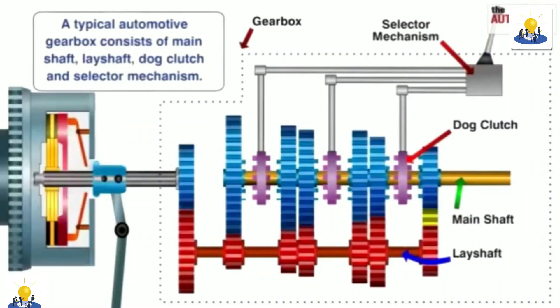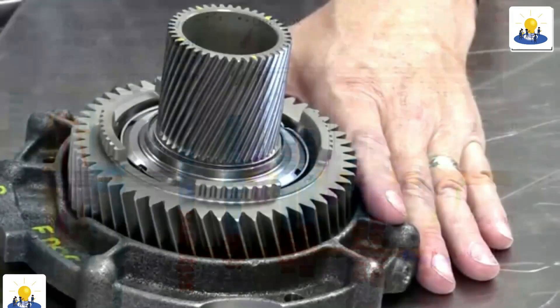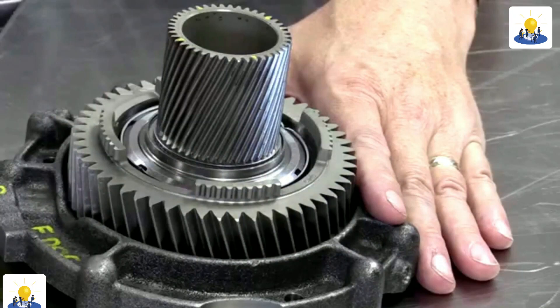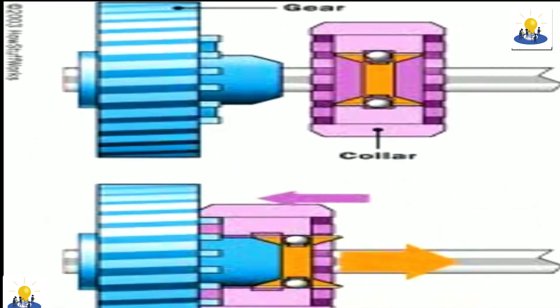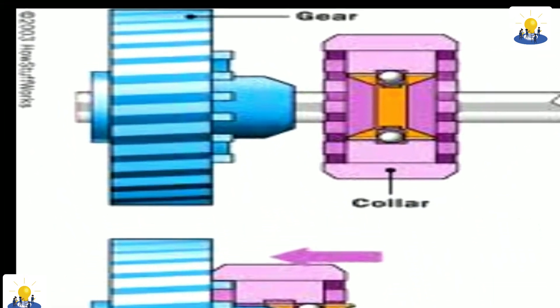Dog Clutch. In a modern constant mesh manual transmission, the gear teeth are permanently in contact with each other and dog clutches, sometimes called dog teeth, are used to select the gear ratio for the transmission.